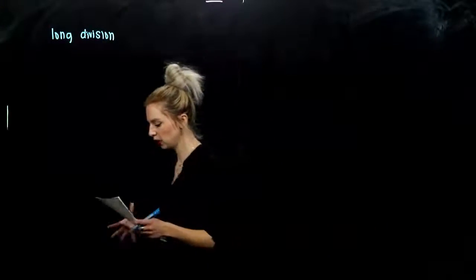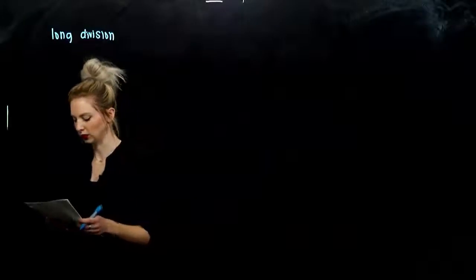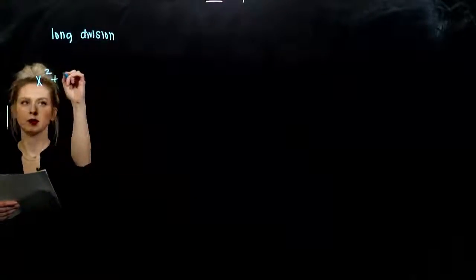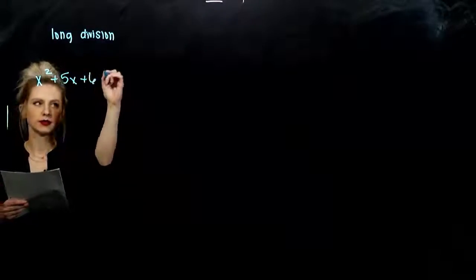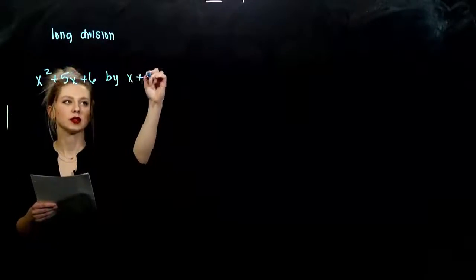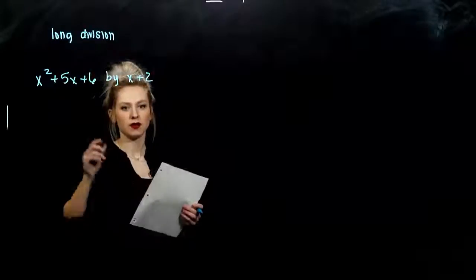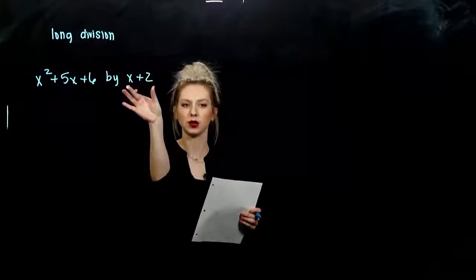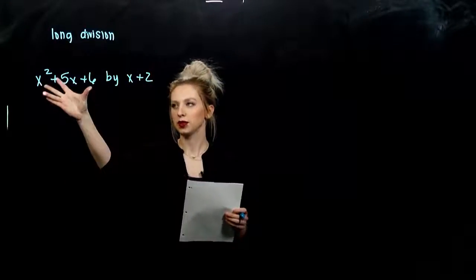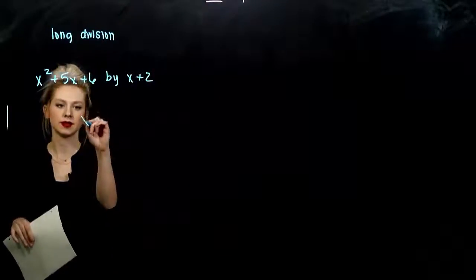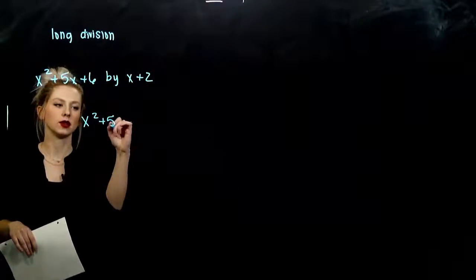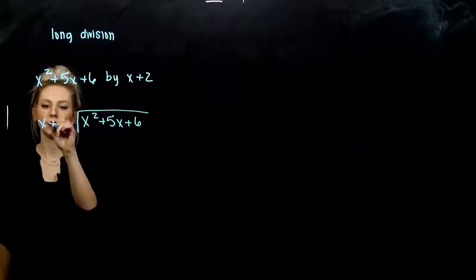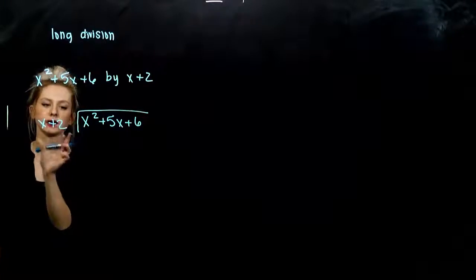So we're going to go back to that, but now with polynomials. The first example: we want to divide x squared plus 5x plus 6 by x plus 2. So we're dividing a trinomial by a binomial. We always take the first one — it goes on the inside of our long division line, and what we're dividing by goes on the outside.